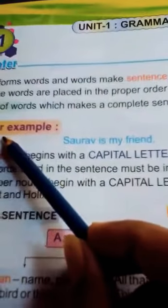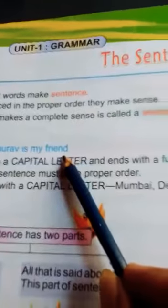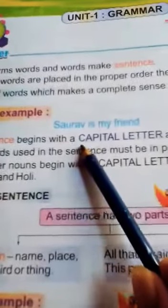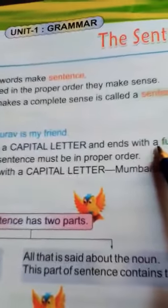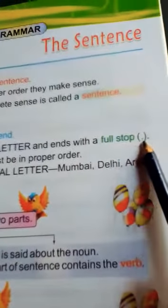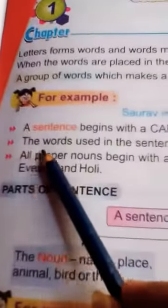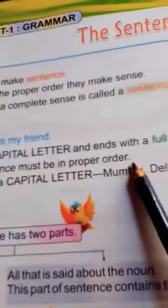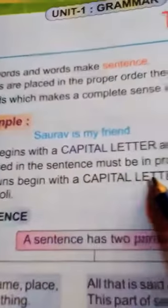For example: 'Saurabh is my friend.' A sentence begins with a capital letter and ends with a full stop. The words used in the sentence must be in proper order. All proper nouns begin with a capital letter.